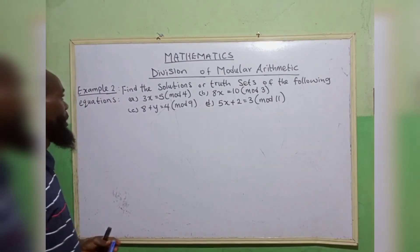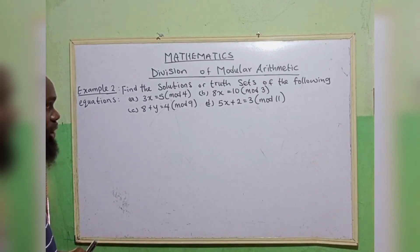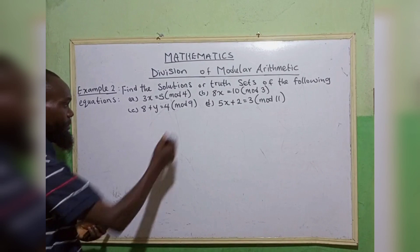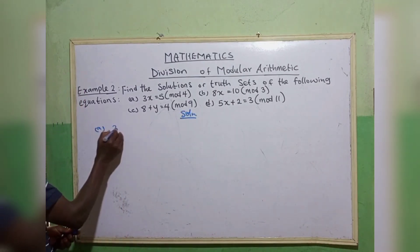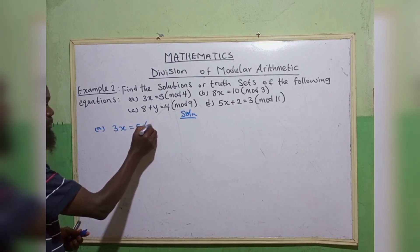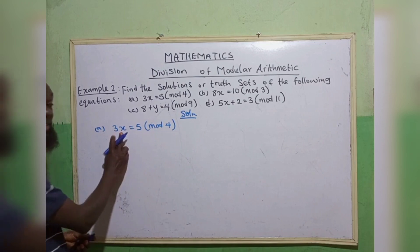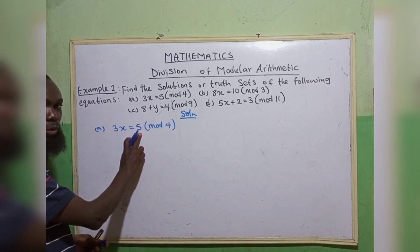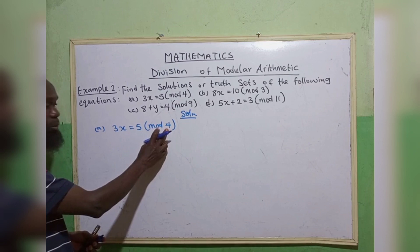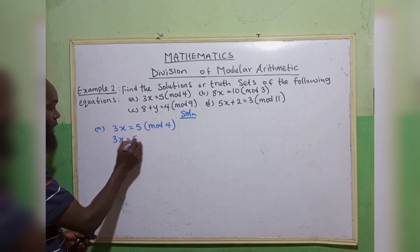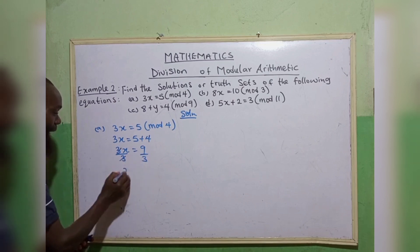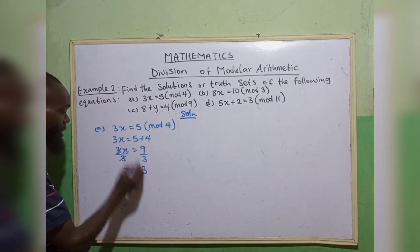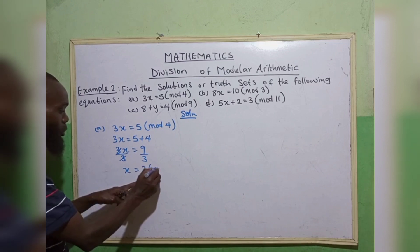Example 2. Find the solutions or truth sets of the following equations. The first one, we have 3x is equal to 5 in mode 4. 3 cannot go in 5 without remainder. We add the modulo. 3x is equal to 5 plus 4. 3x is equal to 9. So 3 can go in 9. So x equals to 3 in mode 4.